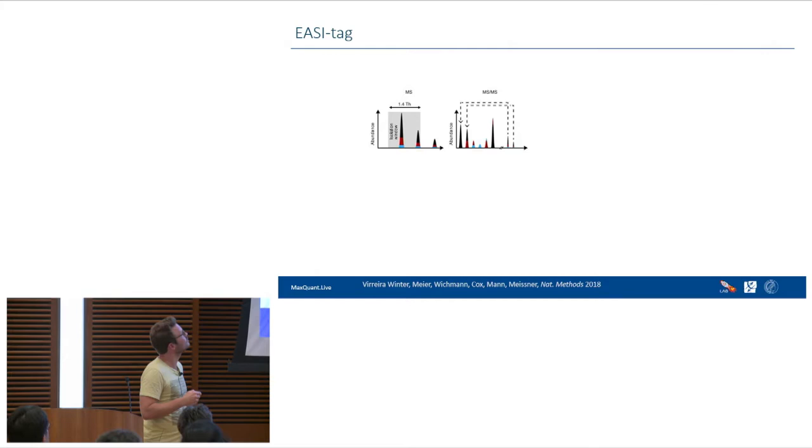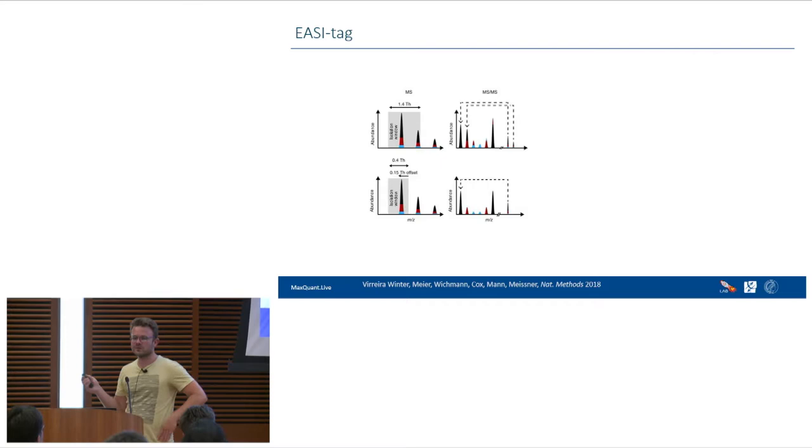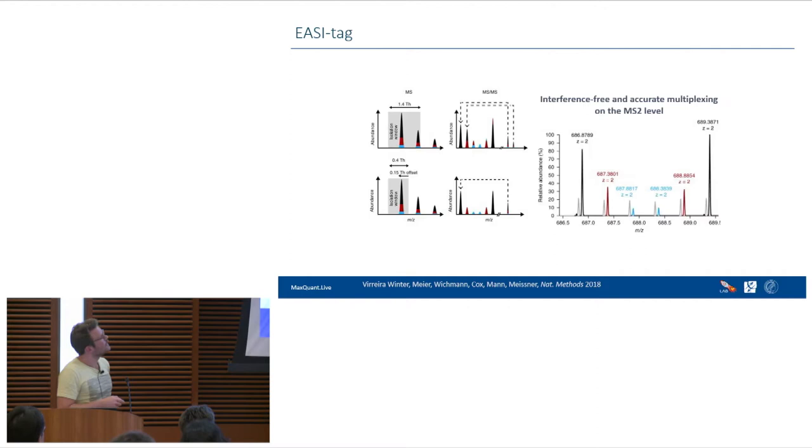But there is some problems when you apply normal top N strategy to that. Because normally the mono isotopic peak is selected for fragmentation. But it can also happen or it often happens that it's the first peak or the second. But let's assume it's a mono isotopic peak. Then there is the isolation window which is usually like 1.4 Thompson. And then also part of this first isotopic peak is in this window. And the whole strategy doesn't work anymore. Because we have this one isotope which should be used for the quantification. But it's contamination in this case.